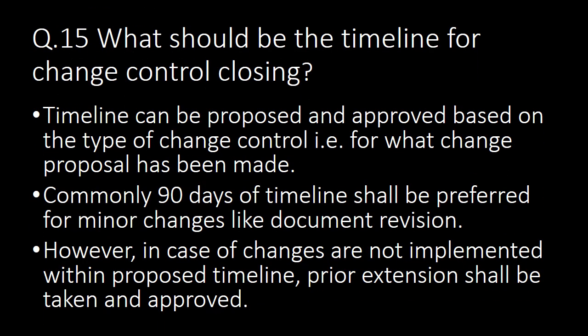What should be the timeline for change control closing? The timeline can be proposed and approved based on the type of change control. Commonly, 90 days of timeline shall be preferred for minor changes like document revision. However, if changes are not implemented within the proposed timeline, a prior extension shall be taken and approved.